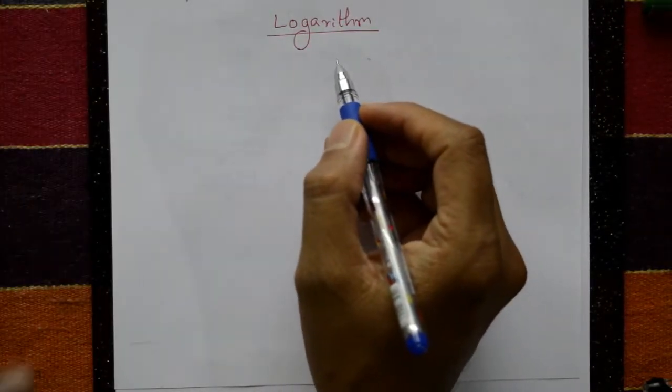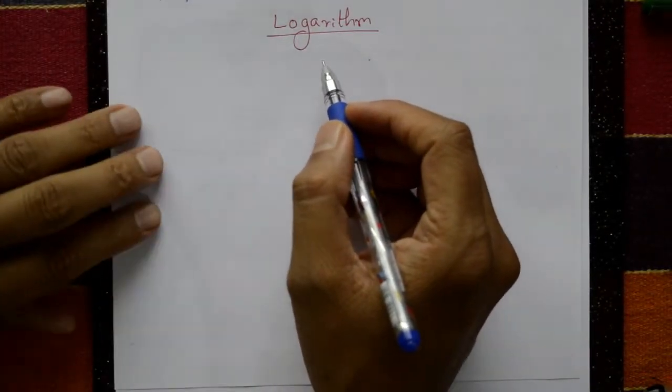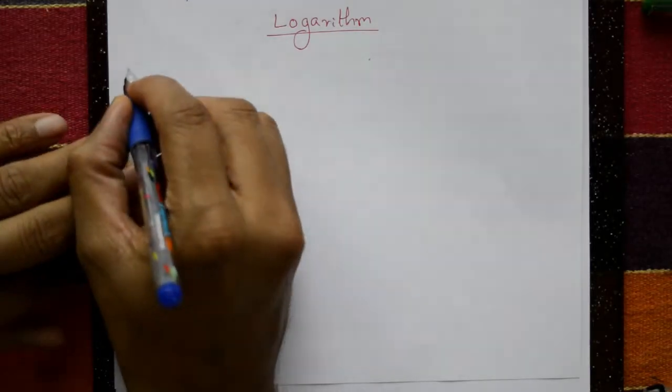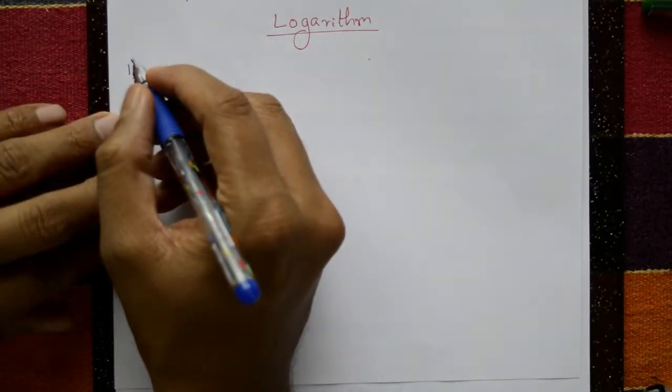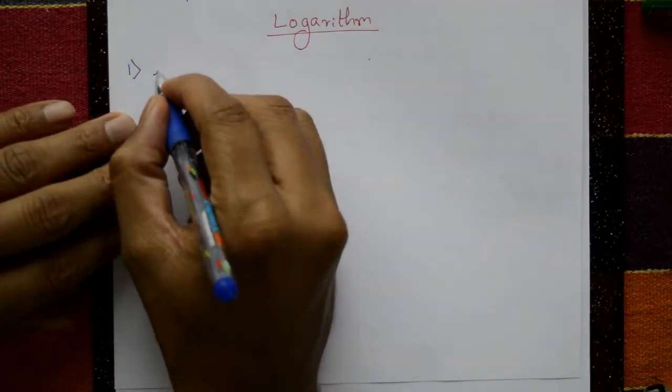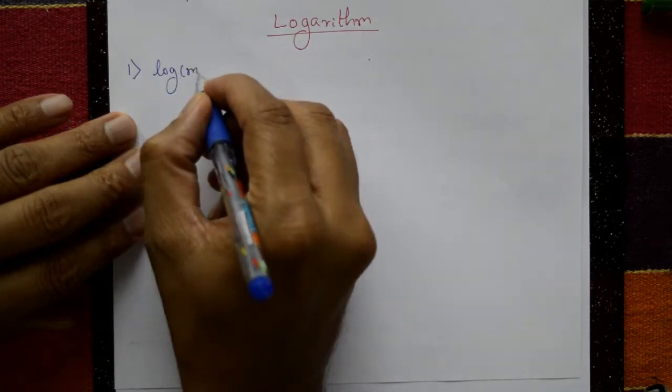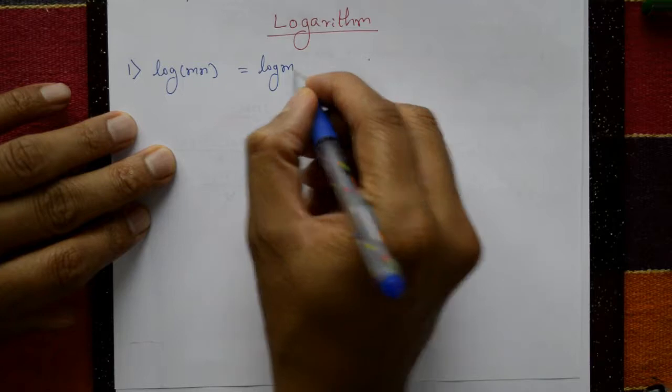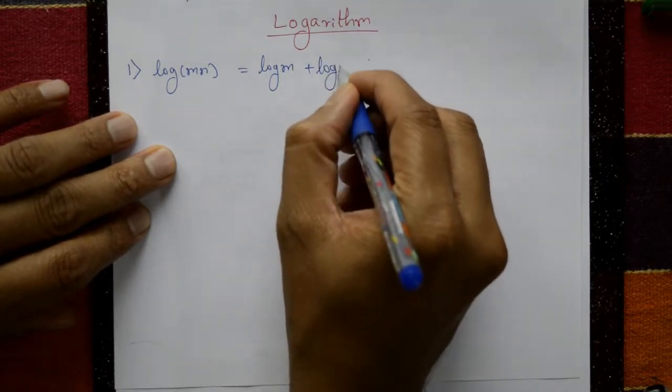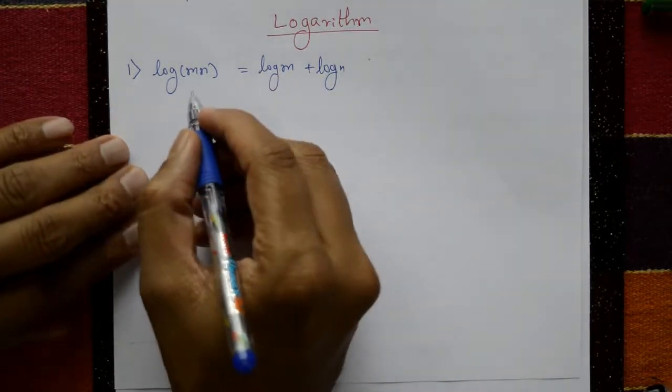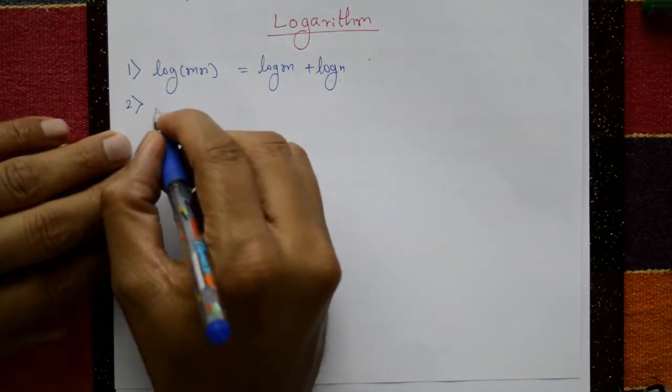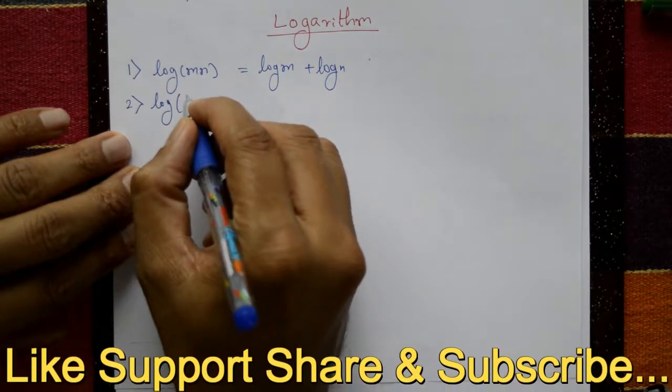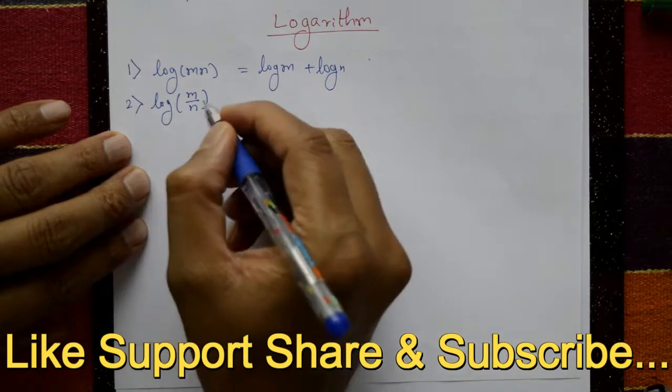Logarithm formulas: First one, log of mn is equal to log m plus log n. Very simple formulas. Second one, log of m by n.